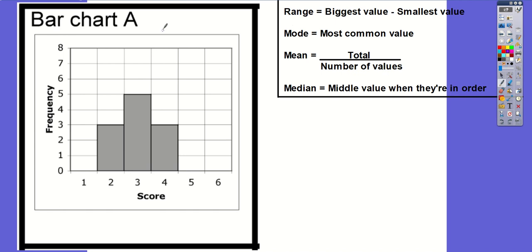I think I did this one in the lesson, but I'm going to show you so you've got it on a video. The idea of what you're supposed to be doing is you take all of these bar charts, you work out the mean, median, mode and range, and then you match it to the table on the back of the sheet.